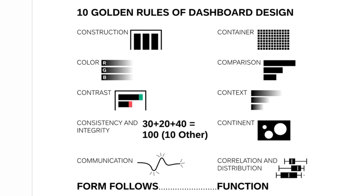The next one, heavily used by our customers — and to stick to our little game of always starting with a C — we call it continent, but it is essentially the geo map, where you bind data geographically where it makes sense. One thing you need to watch out for — this is why you see these bubbles in the icon — is something called the lie factor, coming from Tufte.